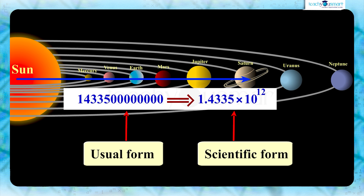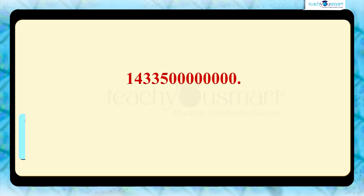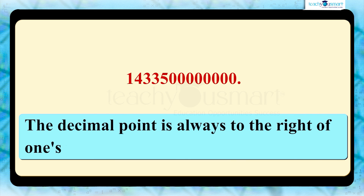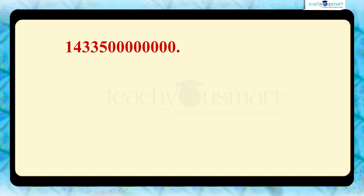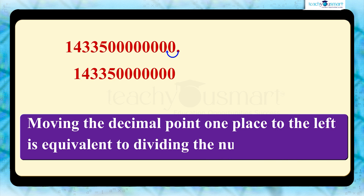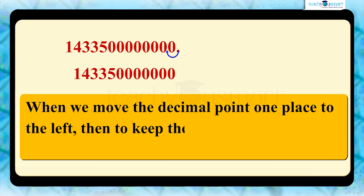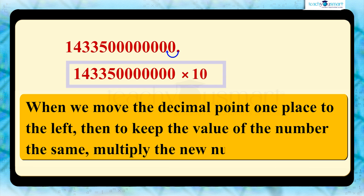Let's see how these two forms represent the same number. First, is there a decimal point for the number 1,433,500,000,000? Yes, there is — the decimal point is always to the right of the one's place. What happens if we move the decimal point one place to the left? When we move the decimal one place to the left, the new number becomes 10 times smaller, which is equivalent to dividing the number by 10. To keep the value of the number the same, we multiply the new number by 10.